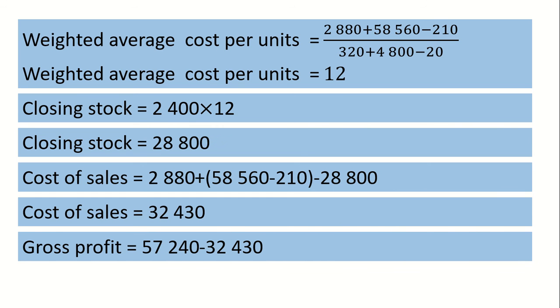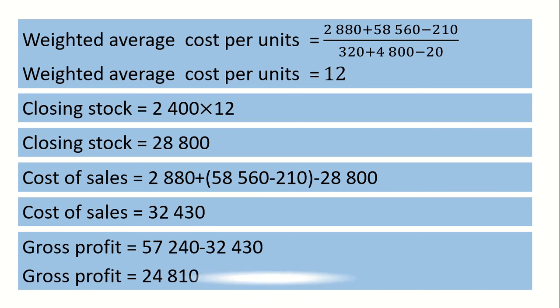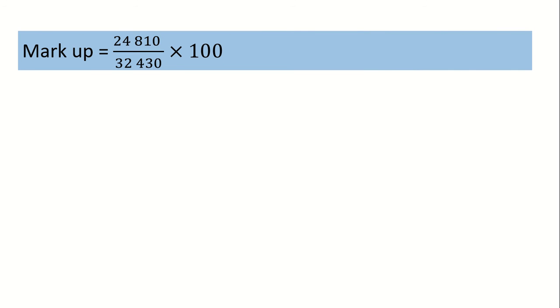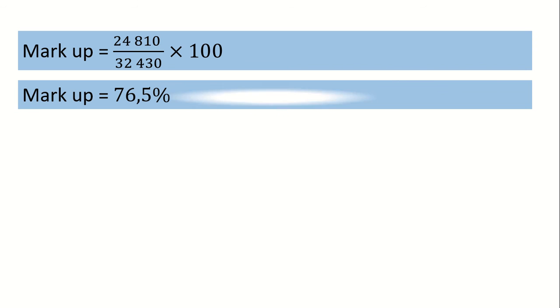To calculate your gross profit, you're going to take your sales figure, which is given in the table as $57,240, minus cost of sales of $32,430. It will give you $24,810. To calculate your gross profit margin, you will simply take your gross profit and divide it by cost of sales. That gives you 76.5%, which is a very high gross profit — pretty much close to 100% — so they're making quite a lot of money.